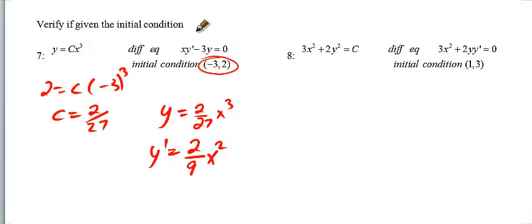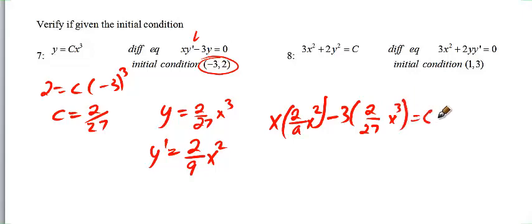And then we're going to plug that in for our y prime. So we have x, and then we have our 2 over 9, x squared, minus 3 times the y, which is here, 2 over 27, x cubed. And this hopefully equals 0.